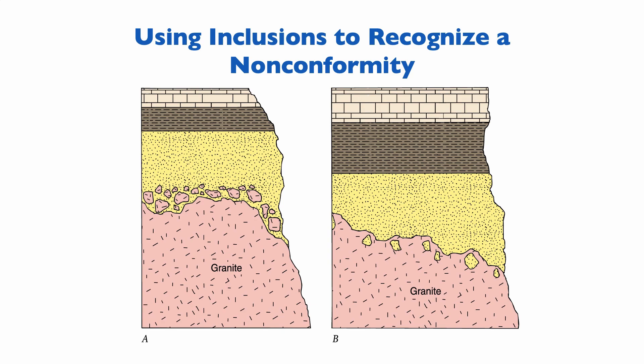On the right, we have inclusions of sandstone within the granite, which implies the sandstone is older than the granite. In this case, the granite is effectively a plutonic rock — an intrusion — and so we are not looking at a nonconformity.